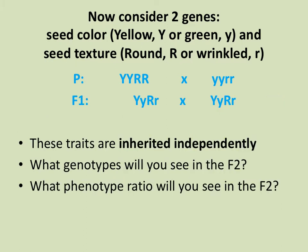If we consider the F1 cross — taking these heterozygous individuals and crossing them together — it's important to note that Y and R are inherited independently. That is, your genotype for Y does not determine your genotype for R. If we cross two F1 individuals together, take a minute to solve what genotypes and phenotypes you'll see in the F2 generation.